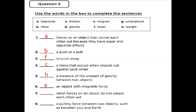Number six: an object with magnetic force — something that has magnetic force. The answer is E — magnet. Number seven: when forces on an object don't cancel each other. The keyword is 'do not cancel each other' — so the answer is G — unbalanced force. Number eight, the last one: a pulling force between two objects such as between you and the earth. Keywords are 'pulling force' and 'between you and the earth' — so the answer is D — gravity.